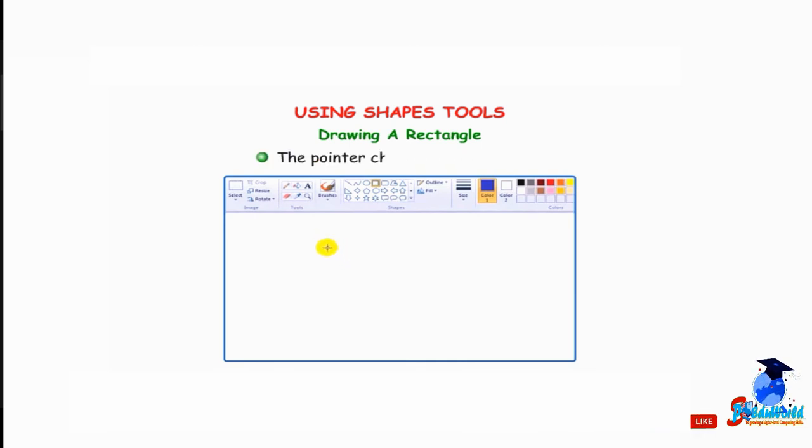The pointer changes into a plus sign. Hold down the left mouse button and drag the mouse to draw a rectangle. Release the mouse button when the rectangle is made.